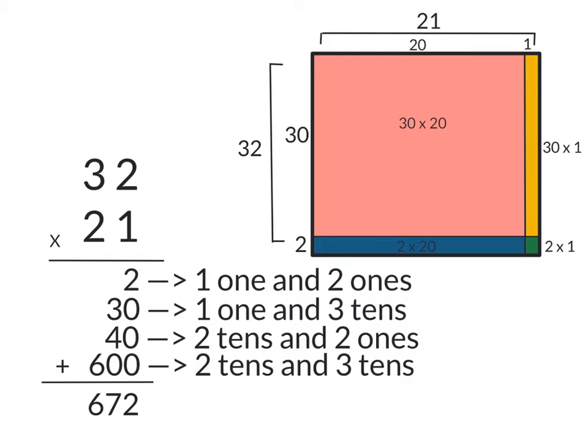When we multiplied the 1 by the 30, that's represented by the yellow box right here. And when we moved over to multiply the 20 times the 2, that's the blue box here. The 20 by the 30 is the big box right here.